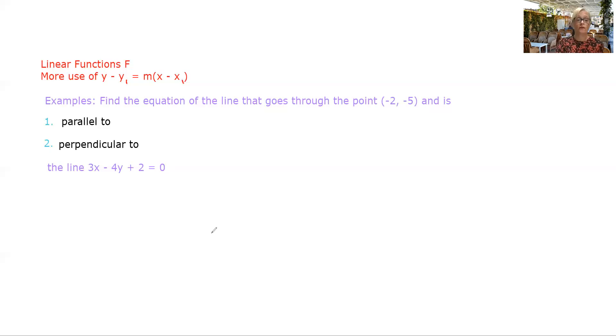In order to do that, our first step is to look at this line here and work out what its gradient is. So if we put 4y over that side we're left with 3x + 2, so y on its own will be 3/4 x + 2/4 which is a half.